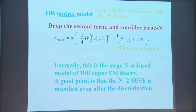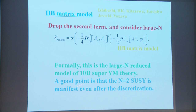This is called the 2B matrix model. I understand that Ishibashi, Kawai, Kitazawa, and Tada had obtained this model independently. Formally this is a large-N reduced model of 10-dimensional super Yang-Mills theory, and a good point is that the N=2 supersymmetry is manifested even after discretization. The matrix ψ consists of Grassmann values and is a 10-dimensional Majorana-Weyl spinor.